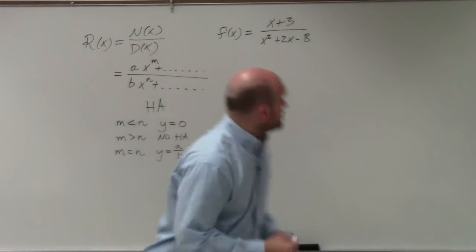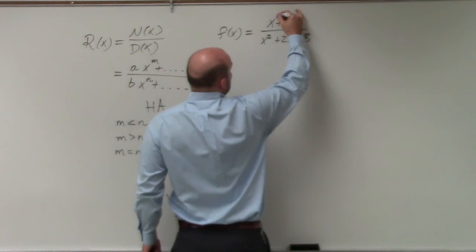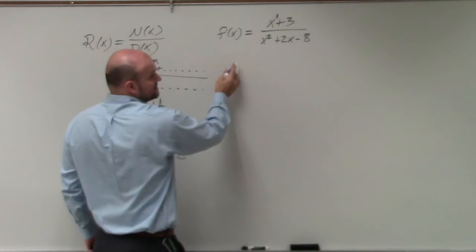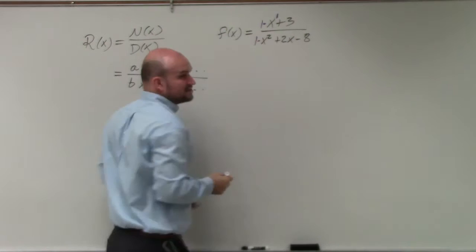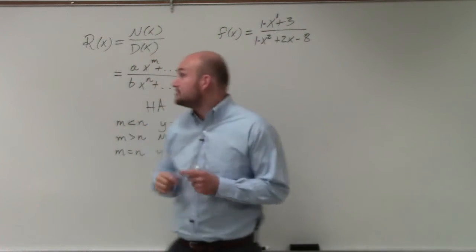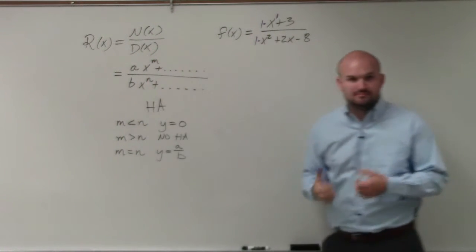We can label our degrees. Here I have a degree of 1 in the numerator, degree of 2 in the denominator, and both leading coefficients are 1 and 1. So I know a, b, m, and n.